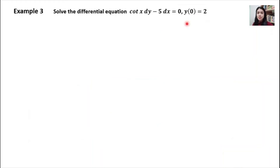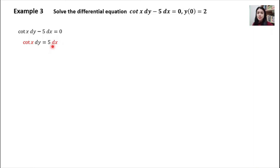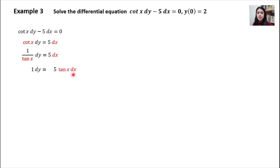Example 3 is another initial value problem with initial condition y(0) = 2. Looking at the differential equation, move a term to the right-hand side. Do not integrate directly because cotangent x is not yet together with dx. You must modify it: cotangent x equals 1 over tangent x. Move tangent x to the right-hand side so you have 5 tan x dx on the right-hand side. Now you have variable x together with dx and can integrate.